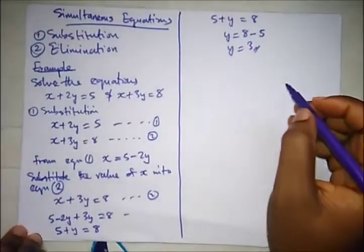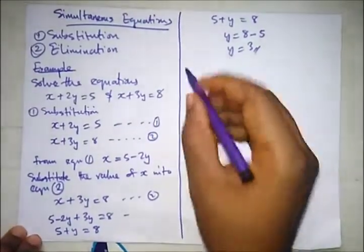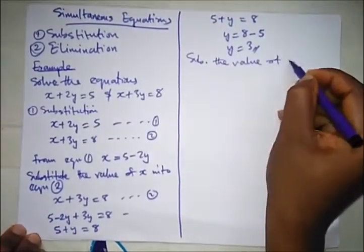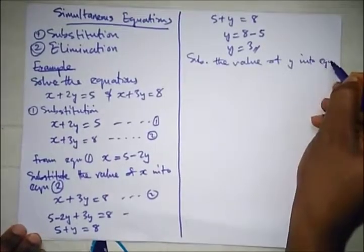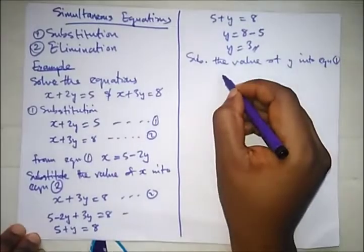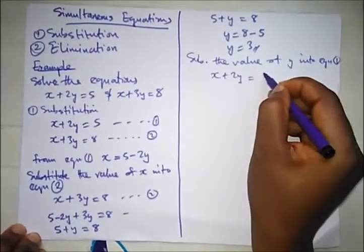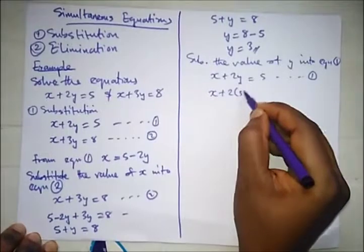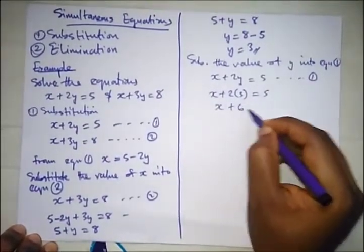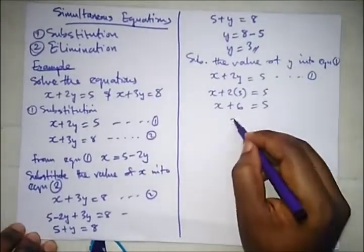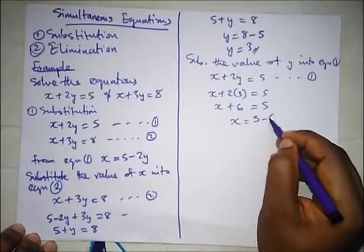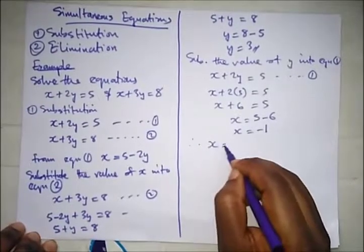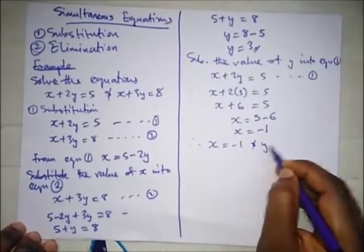So since we have the value of y, let's try to find the value of x. To find the value of x, this is equation 1: x + 2y = 5. So let's substitute the value of y as 3. So we have x + 2(3) = 5, which is x + 2 times 3 is 6, equal to 5. Here, x, taking 6 to the other side, it turns to minus, so 5 - 6, we have x = -1. Therefore, our answer is x = -1 and y = 3. So when you have this in a theory question, this is the way you show your workings in WAEC.